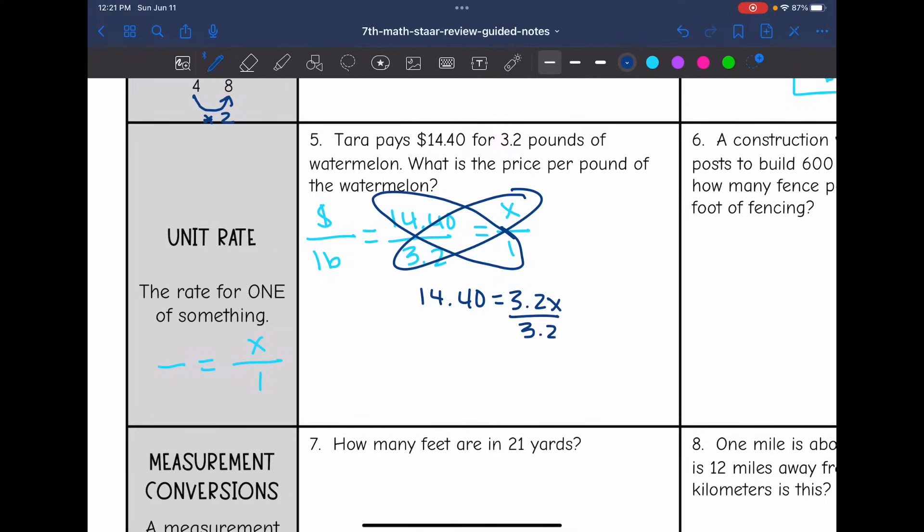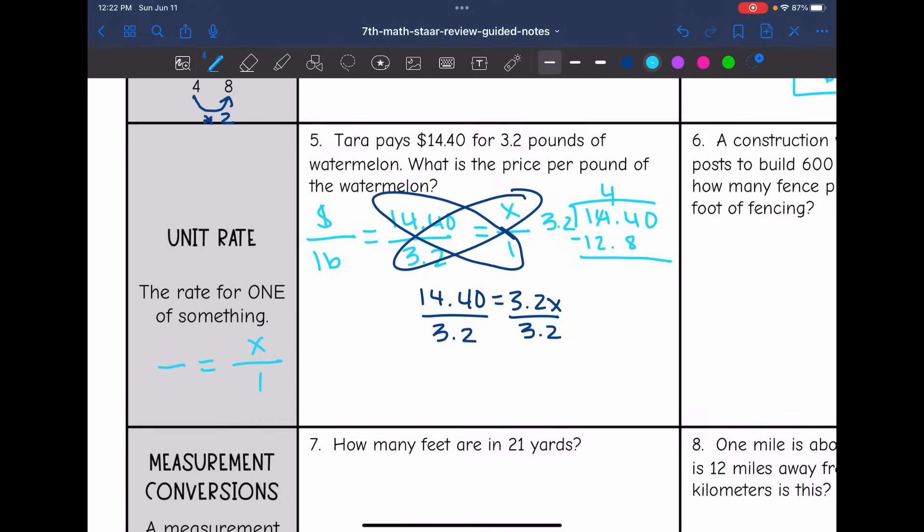And then I would divide by 3.2. So now I'm going to do 14.40 divided by 3.2. And we get $4.50 for the price of a pound of watermelon.